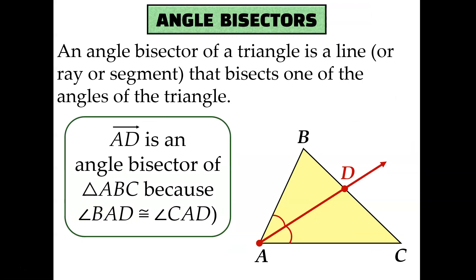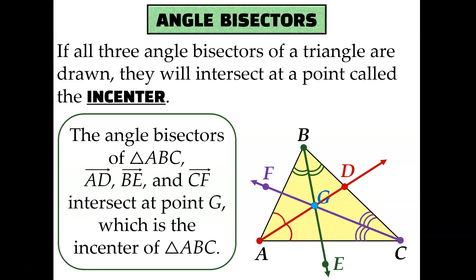Next, we'll talk about angle bisectors. Again, the name tells you exactly what it is. An angle bisector is a line, ray, or segment that bisects one of the angles of a triangle. For example, ray AD is an angle bisector of triangle ABC because angle BAD is congruent to angle CAD — meaning AD cut angle BAC in half. Similar to perpendicular bisectors, if all three angle bisectors are drawn inside a triangle, they will all intersect, making them concurrent. Their point of concurrency is called the incenter.